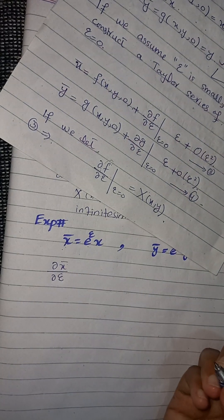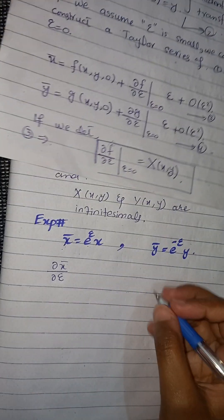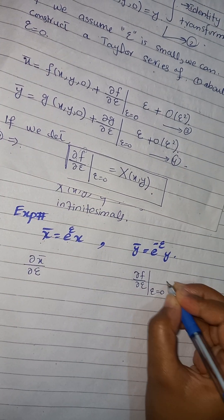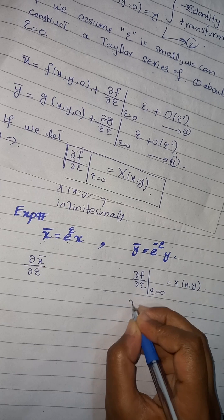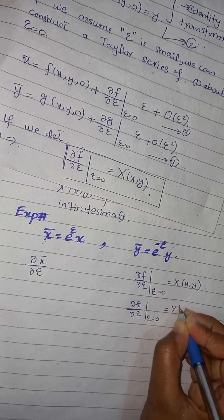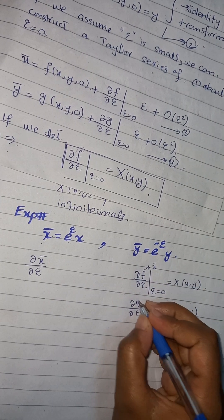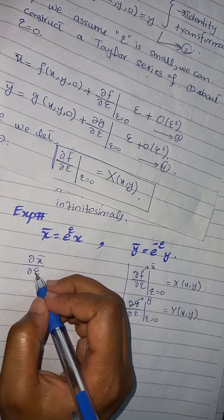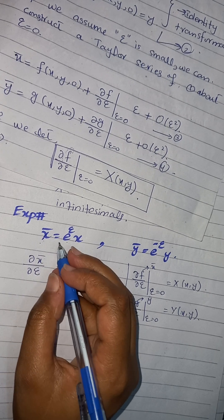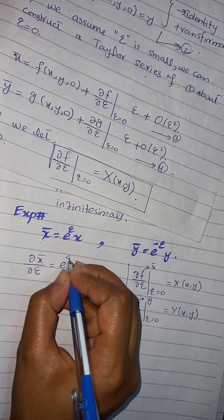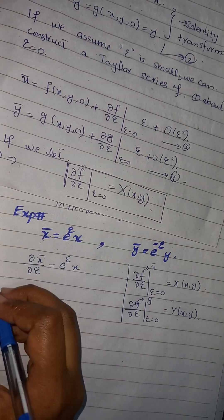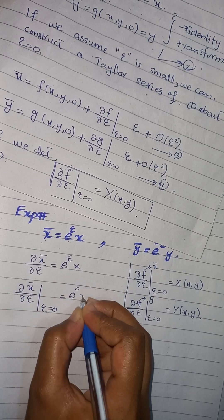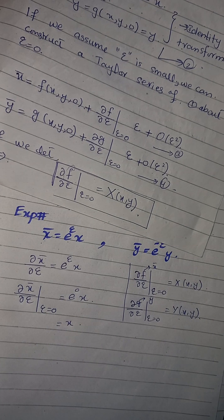We know that x-bar equals f, so we take partial x-bar over partial epsilon, because partial f over partial epsilon at epsilon equals zero equals capital X(x, y), and partial g over partial epsilon at epsilon equals zero equals capital Y(x, y). Here capital f equals x-bar and small g equals y-bar. Taking the partial derivative of e raised to the power epsilon with respect to epsilon: e to the power epsilon remains as is and x is treated as a constant.